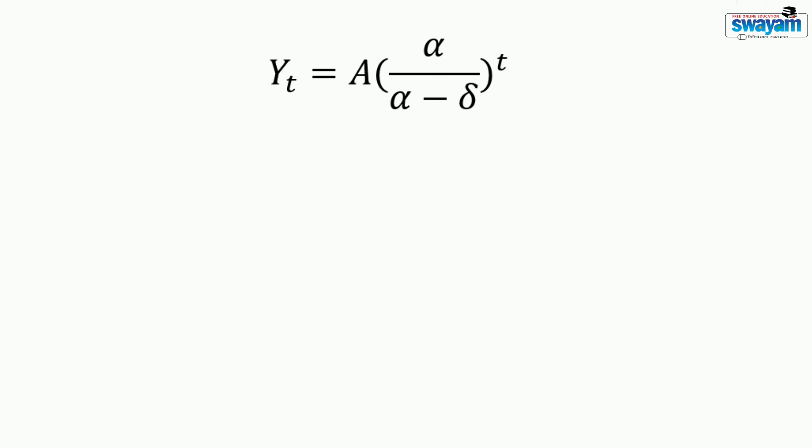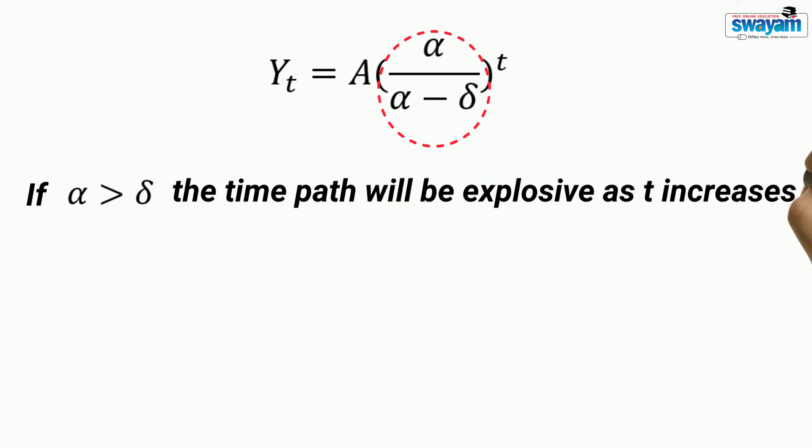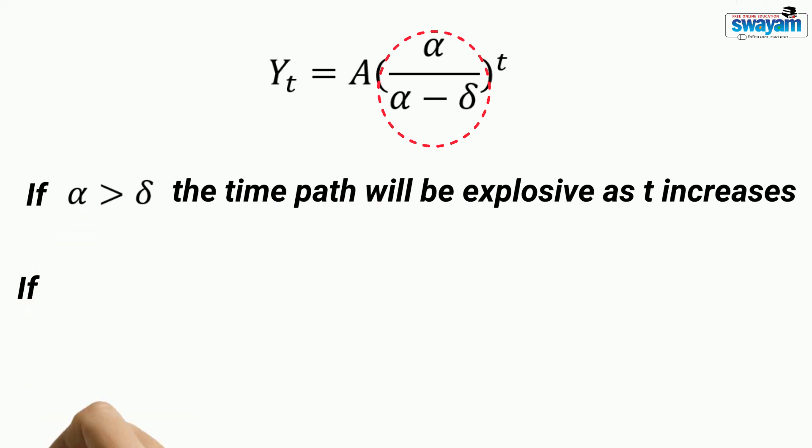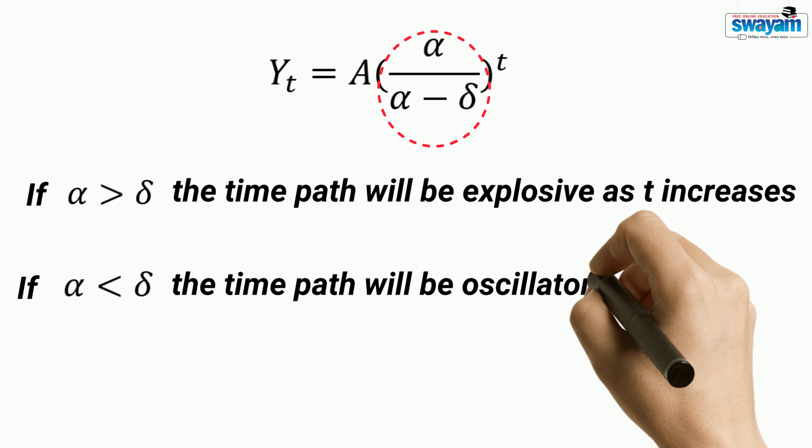The time path of income YT will depend on the ratio alpha by alpha minus delta. If alpha is greater than delta, the time path of YT will be explosive as T increases. If alpha is less than delta, the time path of YT will be oscillatory.